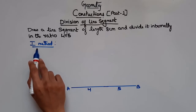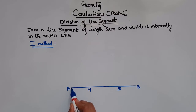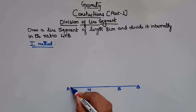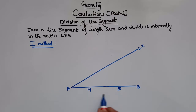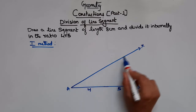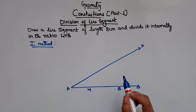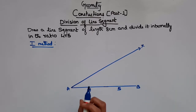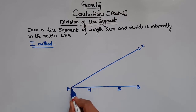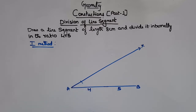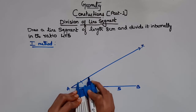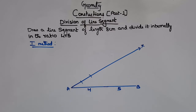In Method 1, we draw a line from point A such that that line makes an acute angle with AB — any angle less than 90 degrees. Let's draw that line from point A and take it as line X. Now you have to see the total parts: here 4 plus 5 gives 9. So you have to cut 9 equal parts on this line — they can be 1 cm or 2 cm but must be equal. Measure 1 cm with your compass and place it at point A, cut the line at 1 cm, then move the compass to the new point and repeat.